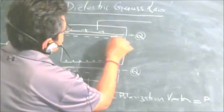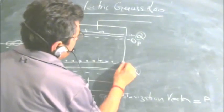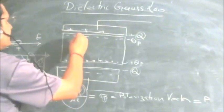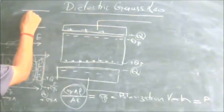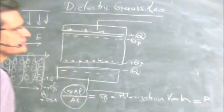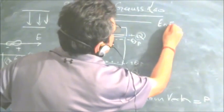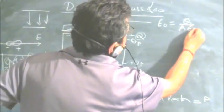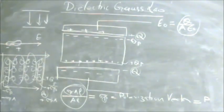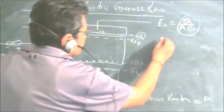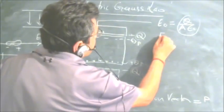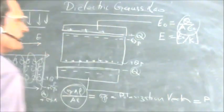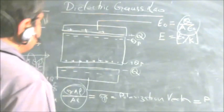The induced charges on the dielectric surfaces are written as minus Q_P and plus Q_P. The electric field between the plates in the absence of any dielectric is E0, equal to sigma over epsilon_0. In the presence of a dielectric, the electric field reduces by a factor K: E = E0 / K, where K is a constant for a given dielectric material. So the electric field inside the dielectric gets reduced.